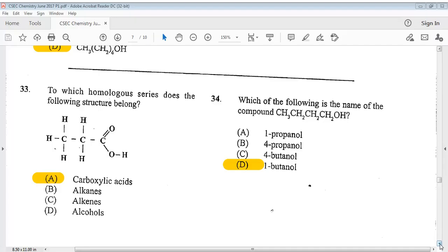Question 34. Which of the following is the name of the compound CH3CH2CH2CH2OH? The answer is D, 1-butanol.